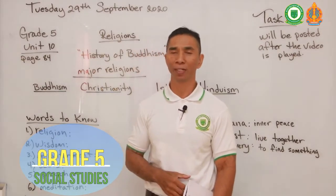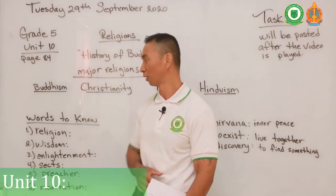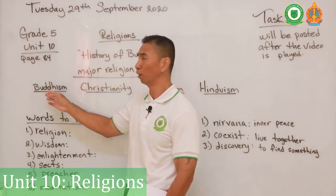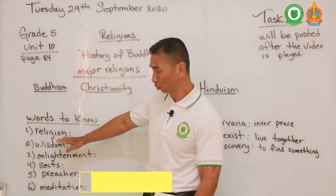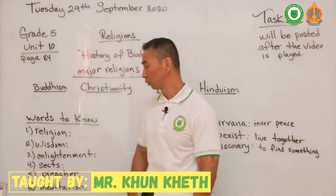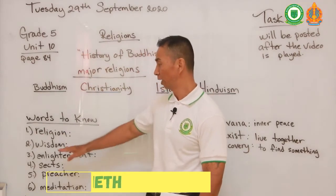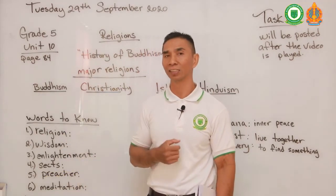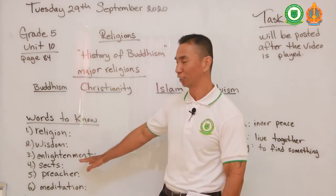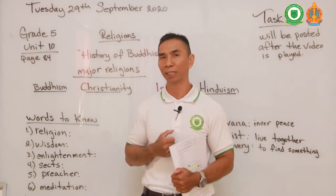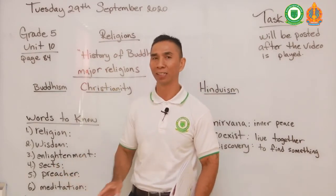Hello class, welcome back to our second video. For today's lesson I want to thank you for submitting your first task — I've seen you've done it really well and you have learned some of the histories of Buddhism. Thank you also for writing the meanings of these words. Religion is a belief that a person has, and wisdom is the knowledge that a person gains from their religion, and enlightenment means when you find inner peace.